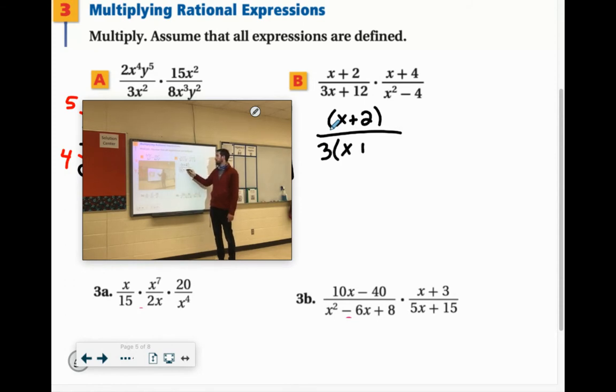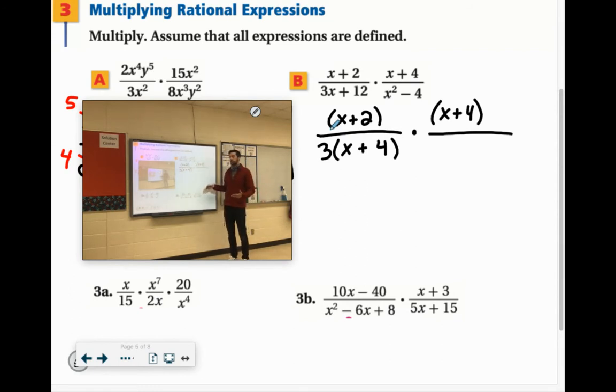3 times x and 3 times 4. We've got this x plus 4 over here. x squared minus 4 is the difference of squares. So the square root of x squared is x. The square root of 4 is 2. So that would factor to x plus 2 and x minus 2.